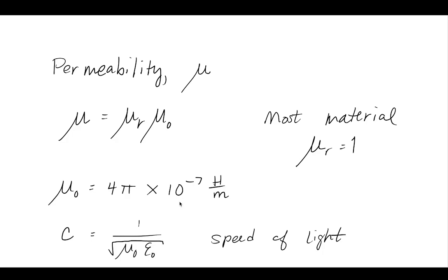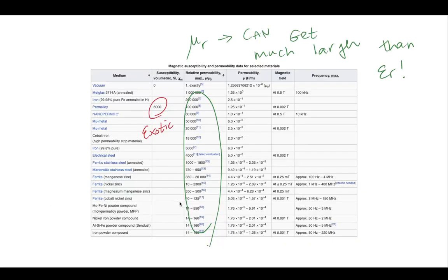We are often dealing with permeability when working with different materials. If you have something like permalloy, it might be an exotic material with a susceptibility of 8,000. For exotic materials like that, you're going to have to break up the relationship between the flux density and the field intensity. However, most materials don't have a susceptibility listed, so often you can deal with the basic case where the relationship is just based on the relative permeability.